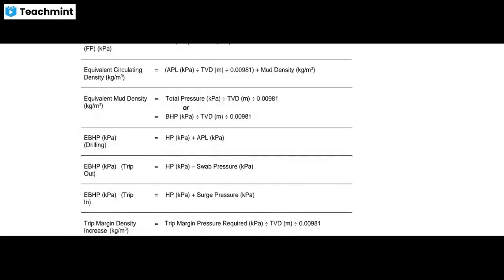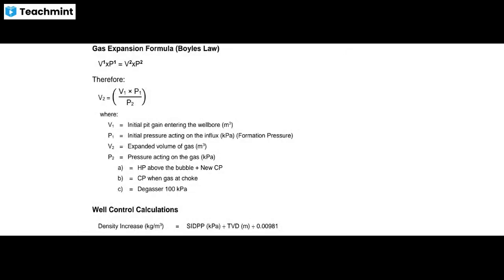For gas expansion calculations, we use Boyle's Law: P1·V1 equals P2·V2, that is VT equals V1 times P1 divided by P2. Here V1 is the initial pit gain volume of the influx, P1 is the initial pressure acting on the influx — that is formation pressure in kilopascals, V2 is the expanded volume of gas, and P2 is the pressure acting on the gas.